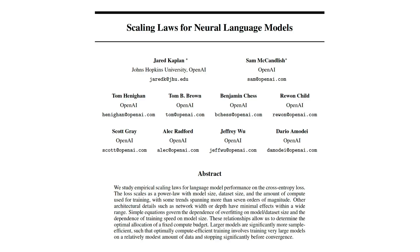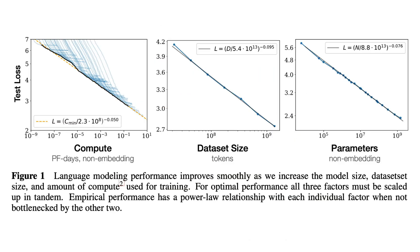The next paper in the reading list is Scaling Laws for Neural Language Models, and it studies how language model performance scales with model size, data size, and the amount of compute used during training. What they found was that architectural details such as network width or depth have minimal effects, and that simple equations govern the dependence of overfitting on model and data size and the dependence of training speed on model size, which could allow us to determine an optimal allocation of a fixed compute budget. Certainly give this paper a go if you want to learn more about how language models scale.